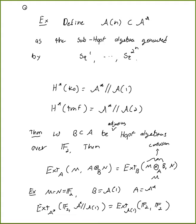The E2 page of the Adams spectral sequence for KO can be computed as Ext over the smaller Hopf algebra A(1) of F2 with F2. This A(1) has significantly fewer generators — just Sq^1 and Sq^2.